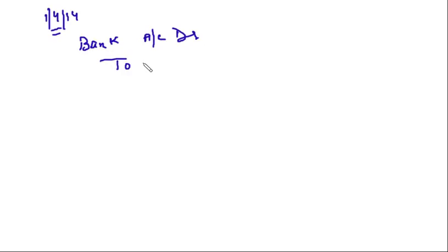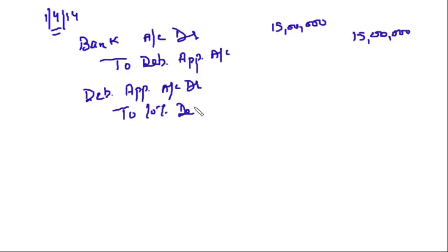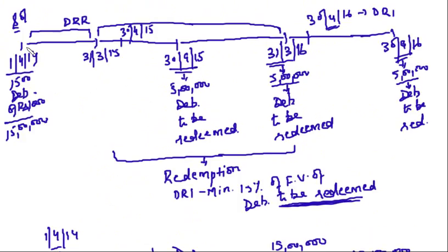Now let's start with the journal entries. On 1/4/2014, on receipt of applications: Bank Account Dr. to Debenture Application Account — Rs. 15 lakh. Then: Debenture Application Account Dr. to 10% Debentures Account — Rs. 15 lakh.